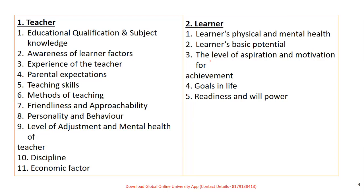Regarding the learner factor: learner's physical and mental health, basic potential, level of aspiration and motivation for achievement, goals in life, and readiness and willpower are key. Previous year questions gave options like parents' qualification or socioeconomic background — those are not correct. The right options are mental health, physical health, basic potential, capability, aspiration, goals, desire, and readiness with willpower.